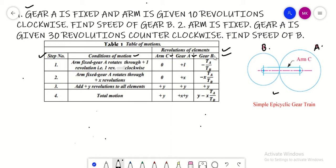To start with, initially the arm is fixed. If arm is fixed, it means the arm is not moving and we are giving gear A rotation of plus one revolution.